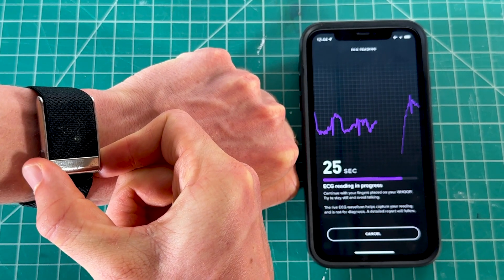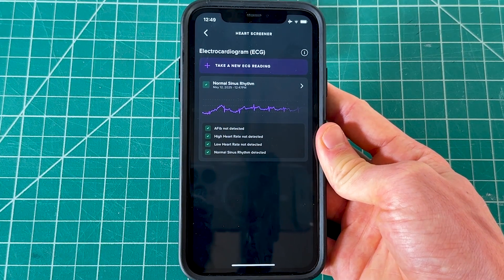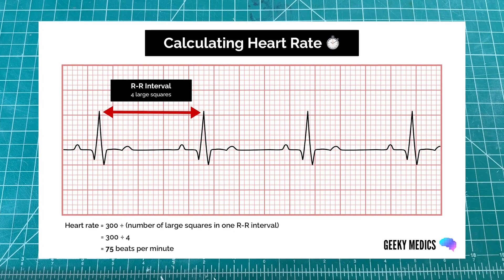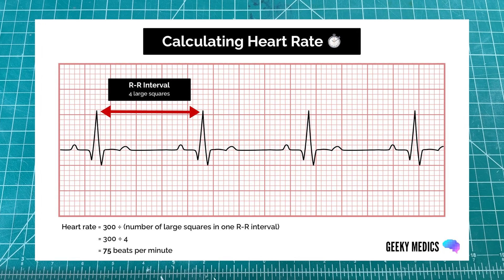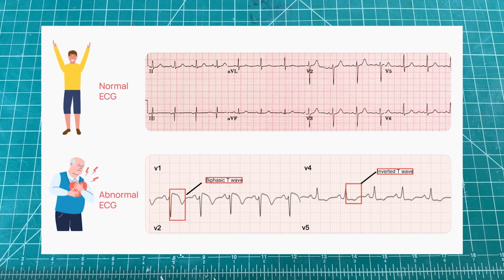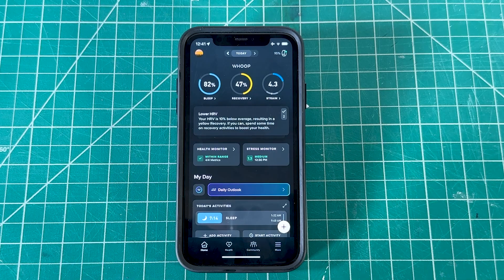Let's talk about ECG readings on the WHOOP. This is a way to understand your heart's electrodynamic waves — to understand your body better, see what conditions your heart may be going through, or if it's having a harder time pumping blood than usual.